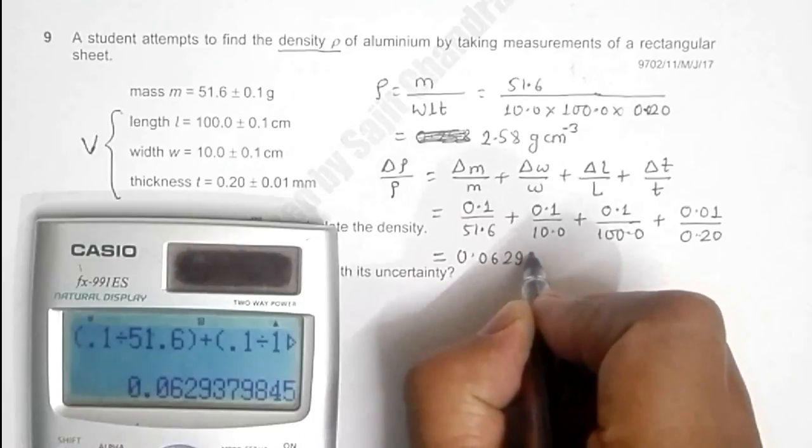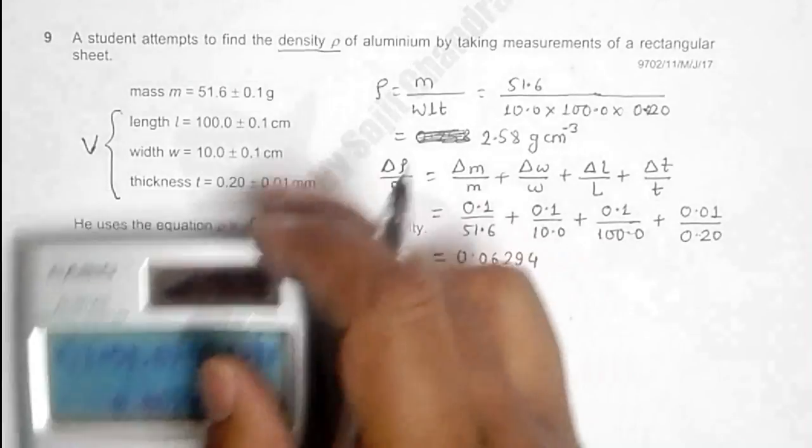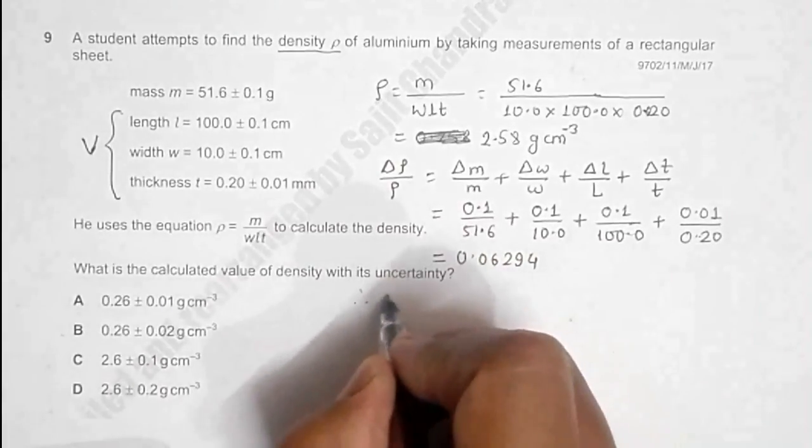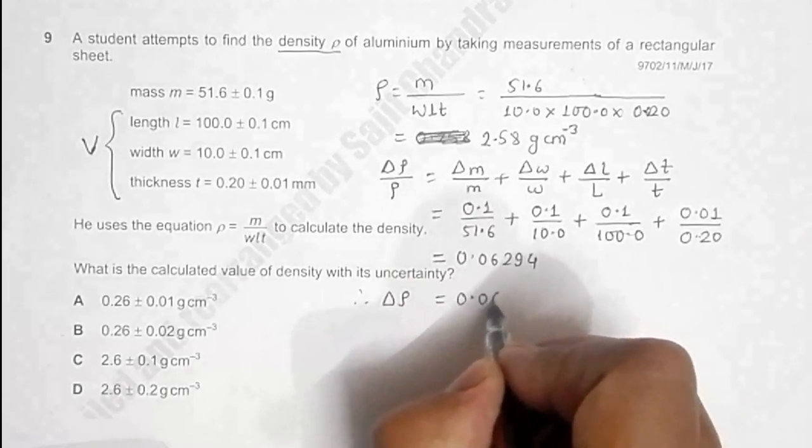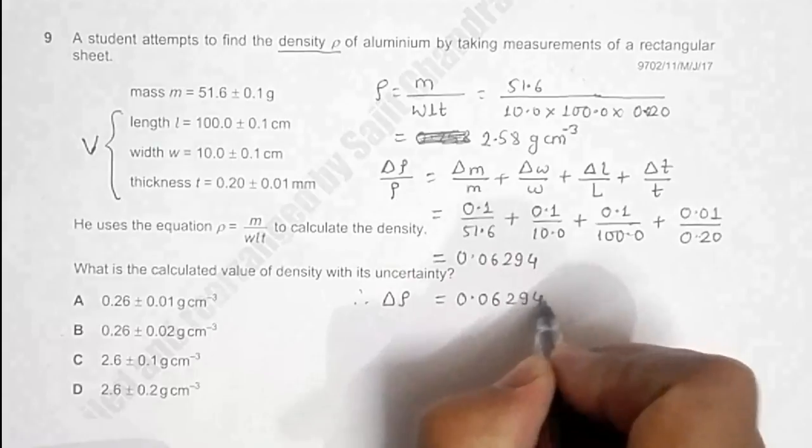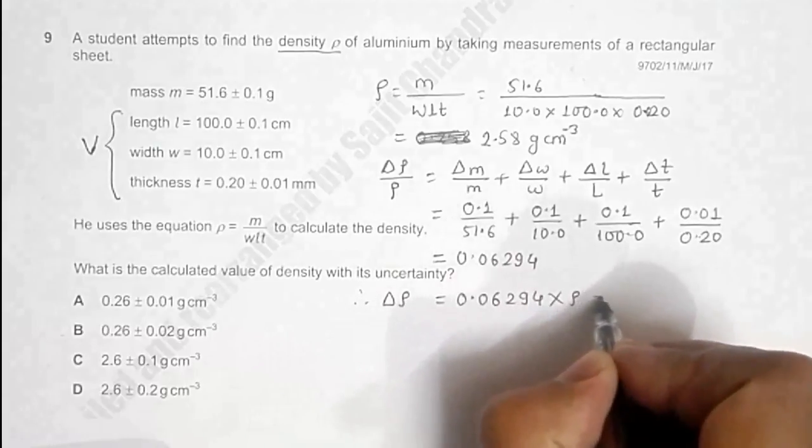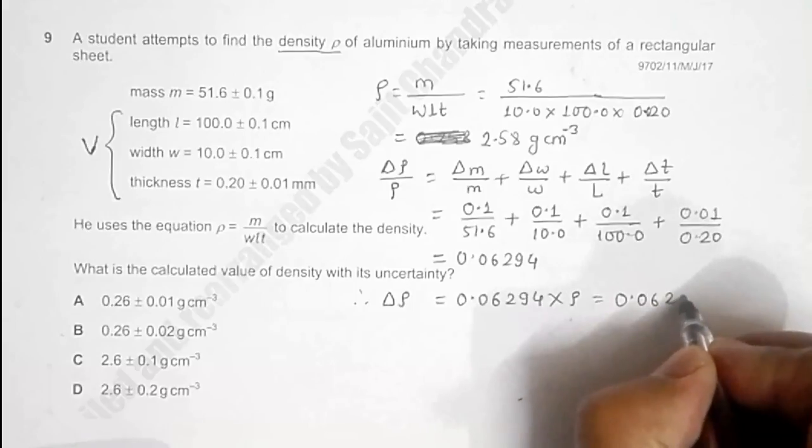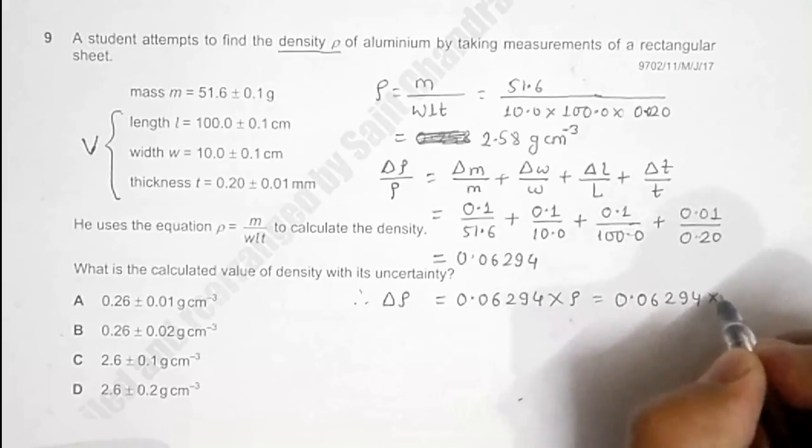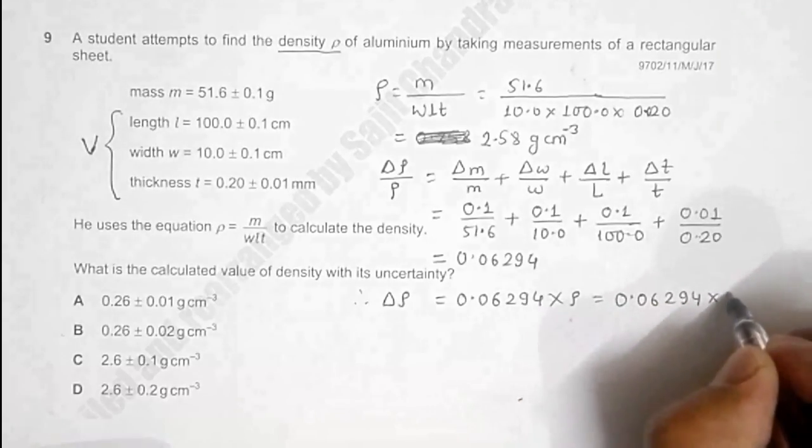So this gives me Δρ = 0.06294 × ρ = 0.06294 ×